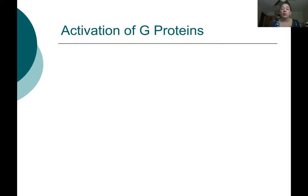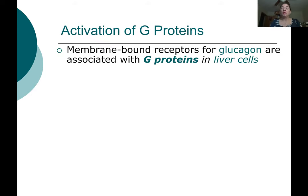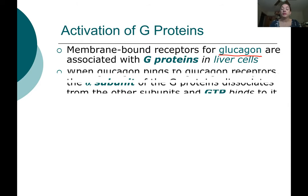G proteins is where we need to spend some time. For example, glucagon is a hormone released from the pancreas, and the receptors for glucagon are found in liver cells — they're associated with G proteins. When a glucagon hormone molecule binds to a glucagon receptor, we have a G protein associated with that receptor. There are three subunits, but the alpha subunit breaks apart from the rest of the G protein and binds to GTP.